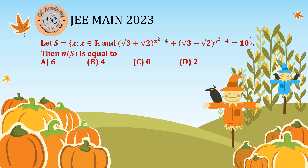Here we are going to solve a problem which appeared in JEE Main 2020. In this problem we have a set S which contains the solutions of the given equation. We need to find how many real solutions exist for this equation, which is in the form of nested radicals with √3 and √2. Basically, we need to solve this equation and obtain the real values of x.